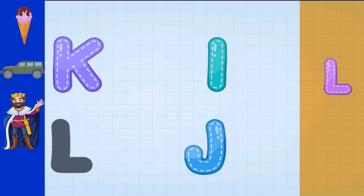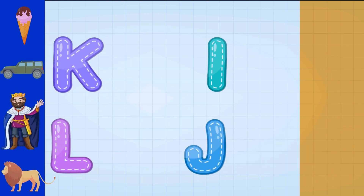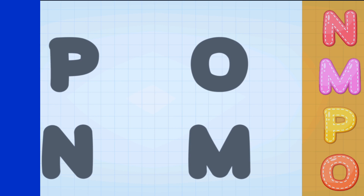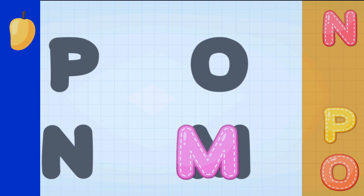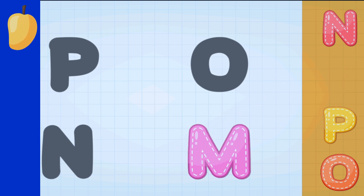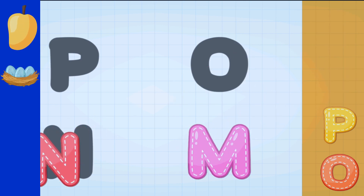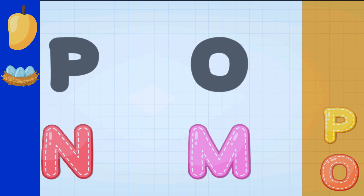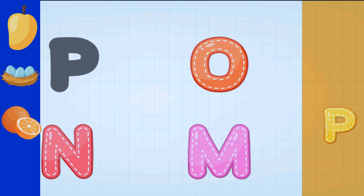K for King, L for Lion, M for Mango, N for Nest, O for Orange.